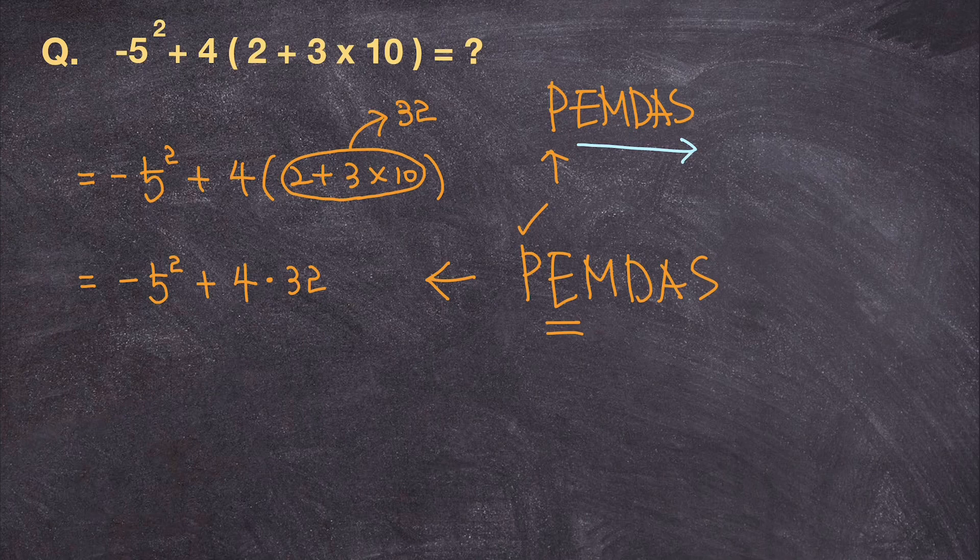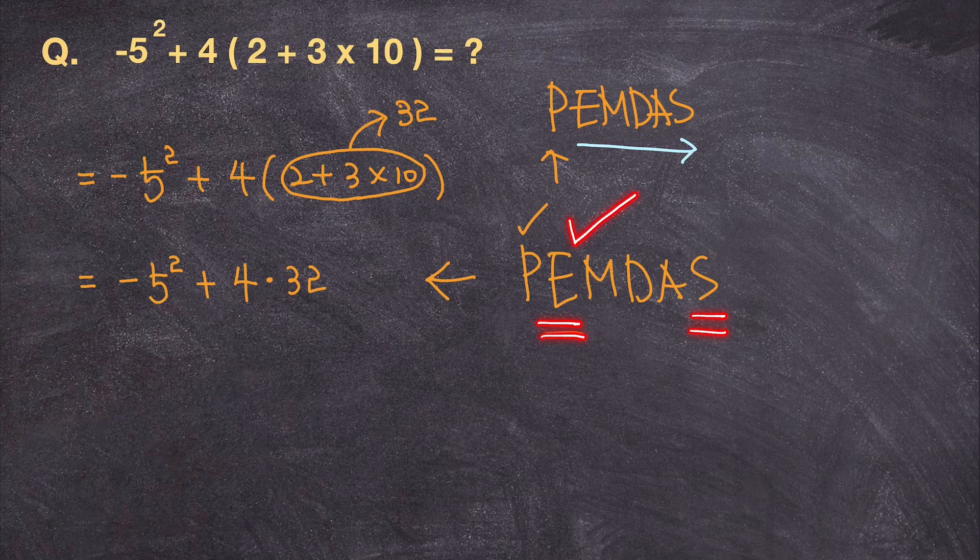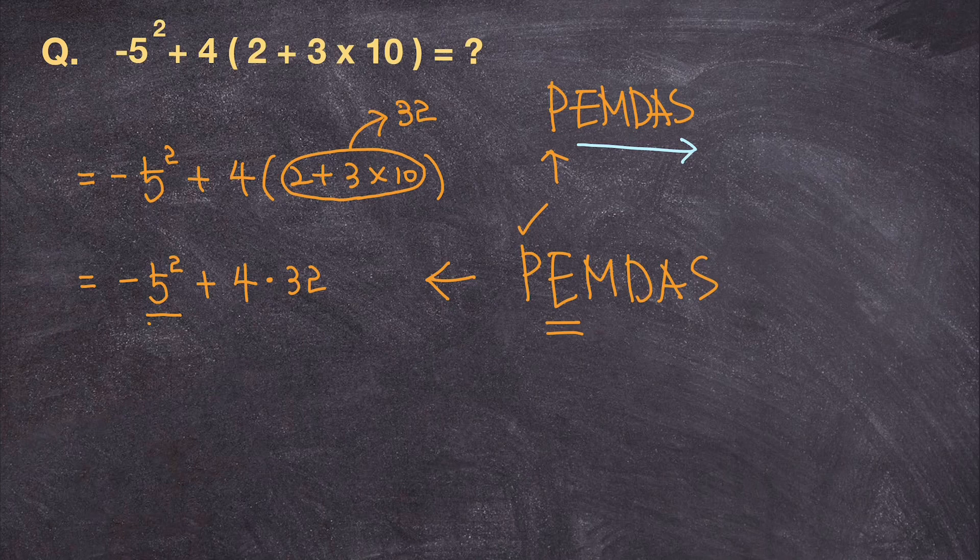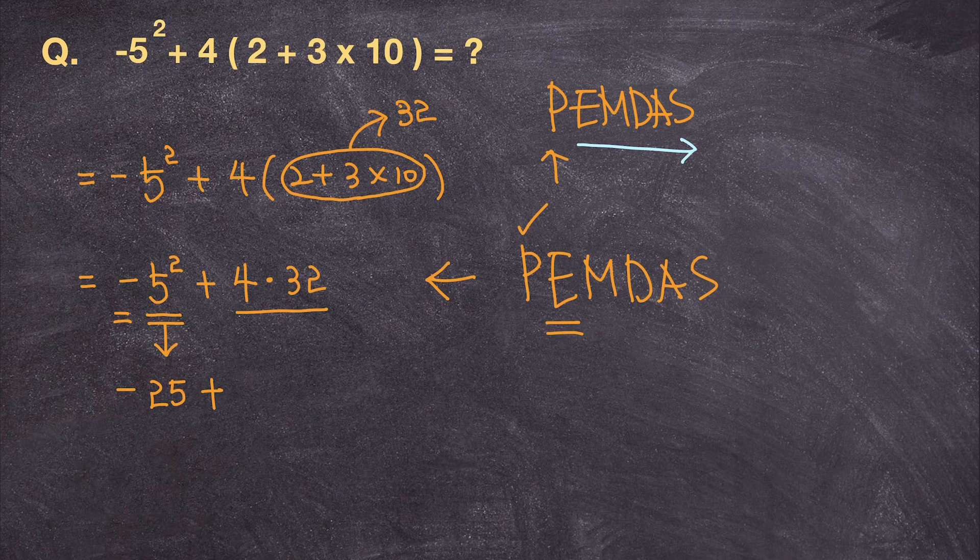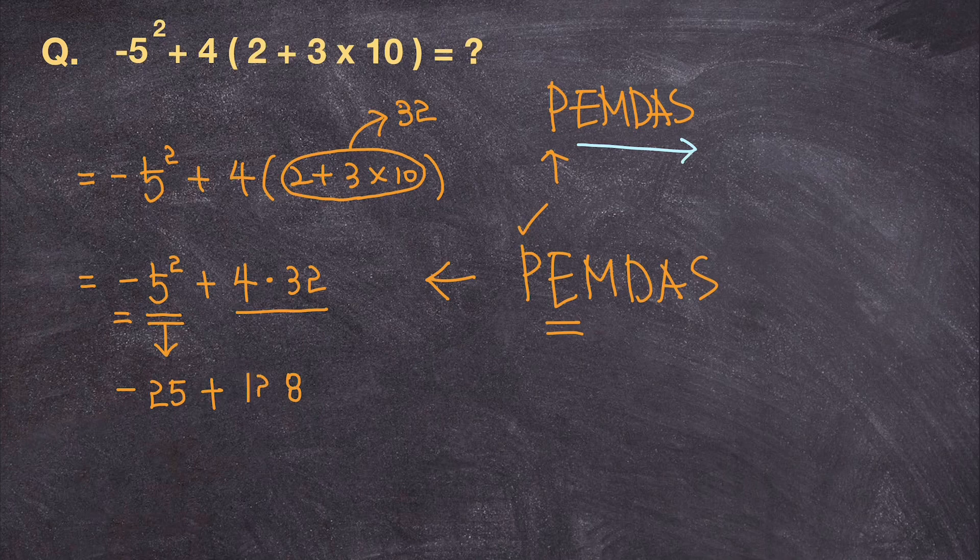You know why? Because exponent comes before subtraction and exponent takes precedent. Which means you deal with 5 squared first and then deal with negative sign next. So I'm going to solve 5 squared first, which gives me 25. And then I'm going to add negative sign to it. And then I'm going to add 4 times 32, which is what? 8 and 12. So 128.